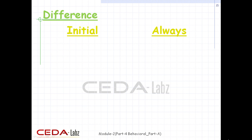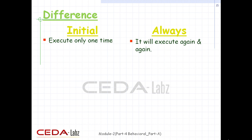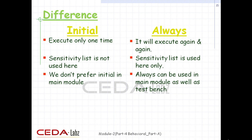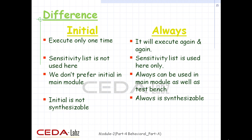The fundamental difference between the two statements: initial is executed only once while always executes again and again. Sensitivity list is not used in an initial block whereas it is used with the always block. Initial is not preferred in the main module whereas always can be used in the main module as well as the test bench. Initial is not synthesizable, while always is synthesizable.